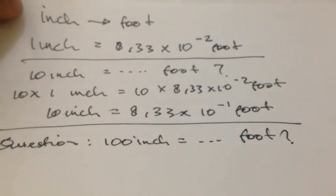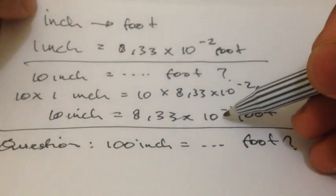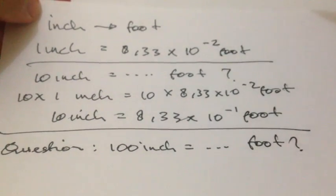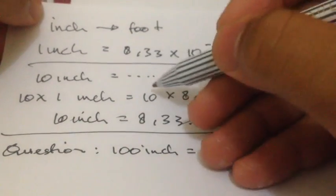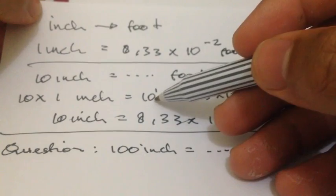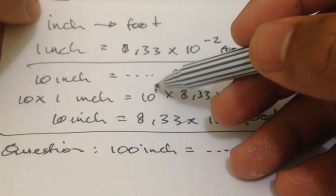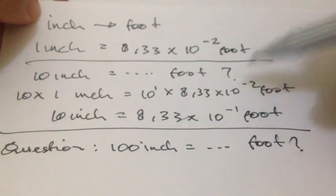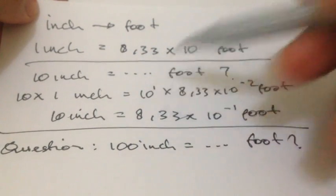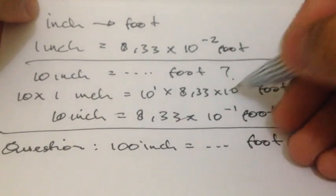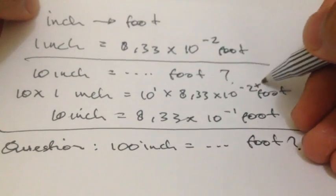All right, we'll have another question then. How do we have 10 power minus 1? All right, your question is actually because we have 10 power minus 1. Remember, 10 is equal to 10 power 1. Well, we multiply this 10 with this 10, so 10 power 1 multiply 10 power minus 2 is actually the same as 10 power minus 2 plus 1.